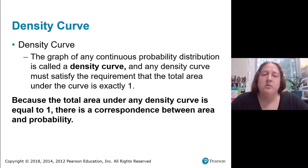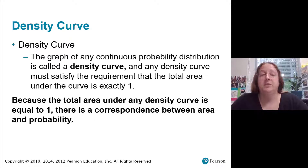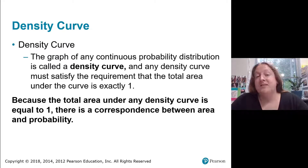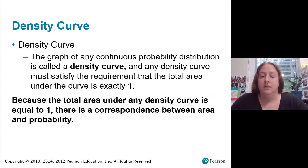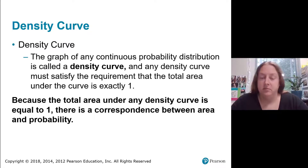A vocabulary word for continuous probability distributions is the density curve, which is just the graph of a continuous probability distribution. Any density curve must satisfy the requirement that the total area under the curve is exactly one. Because the area underneath the density curve is one, that's why there's a correspondence between the area and the probability.